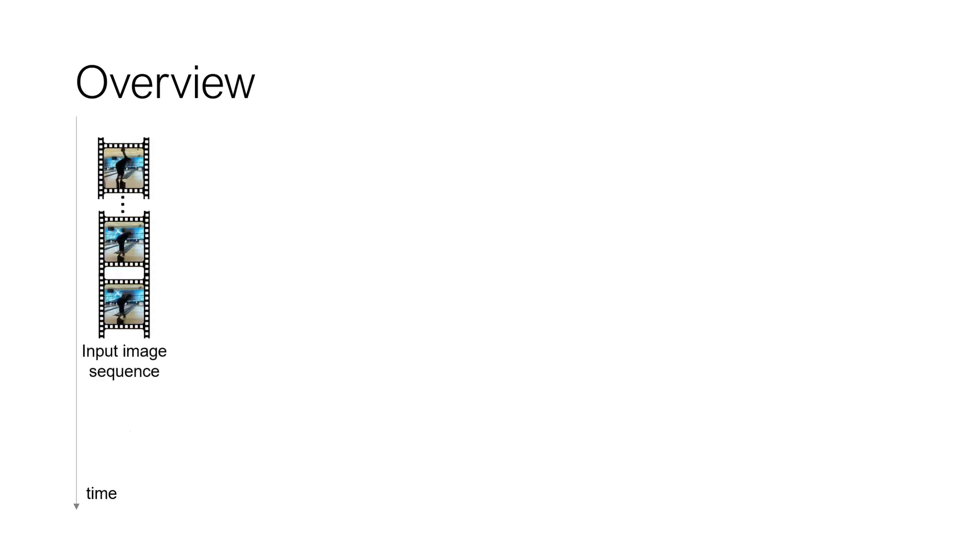Specifically, for each image frame, we first extract a per-image feature vector. From these image features, we learn a latent representation of human dynamics, which we refer to as a movie strip.